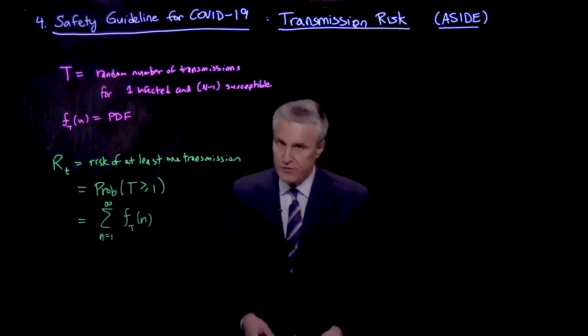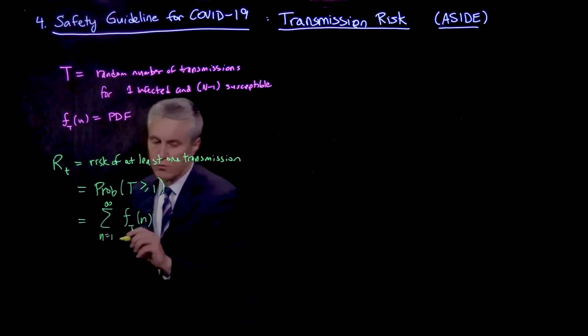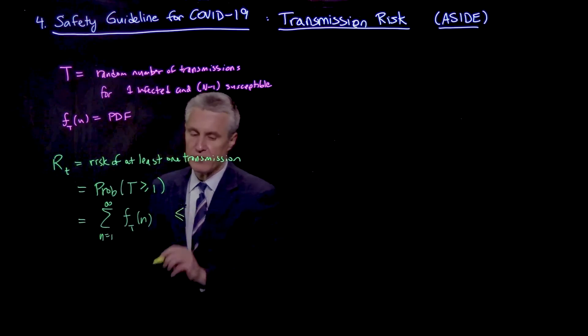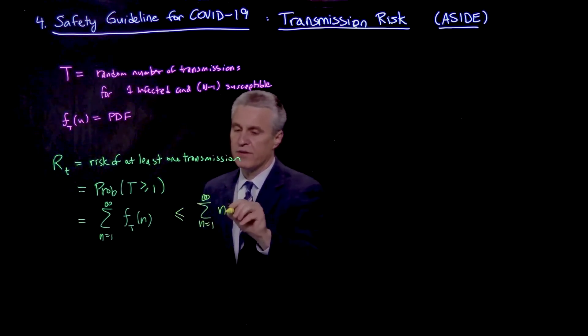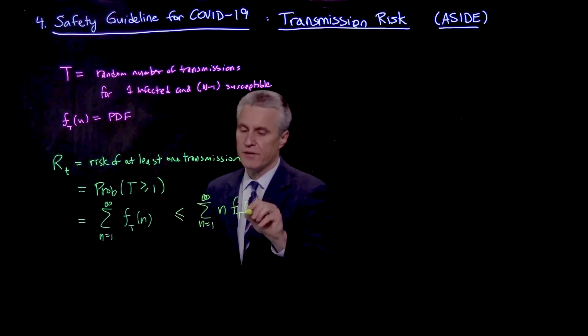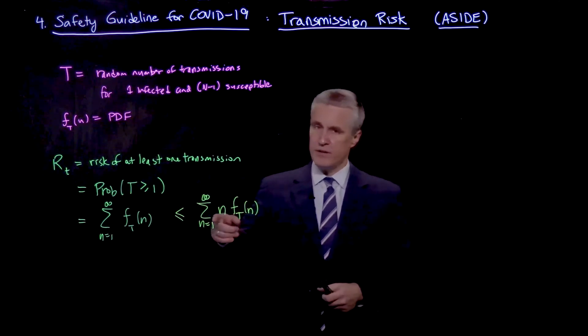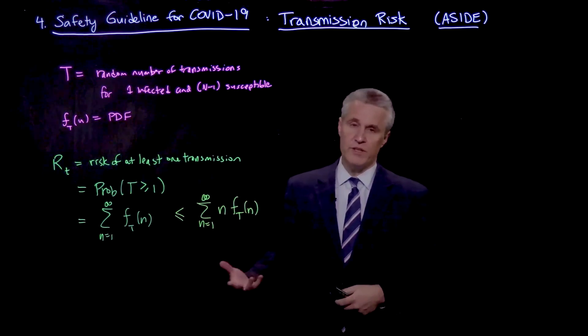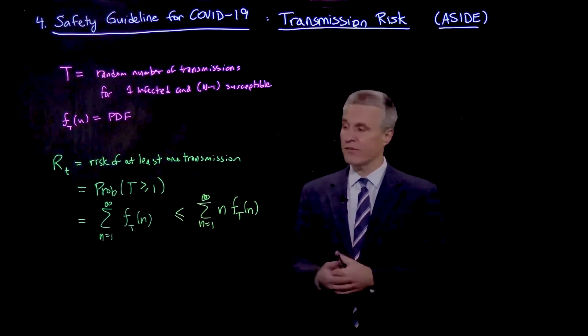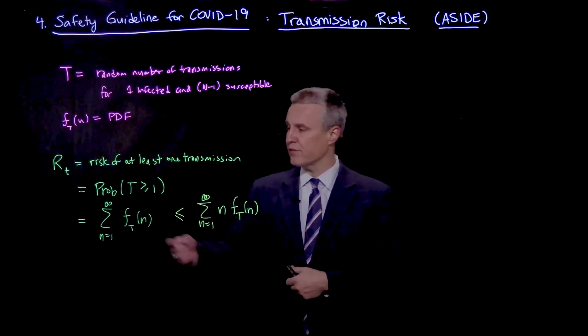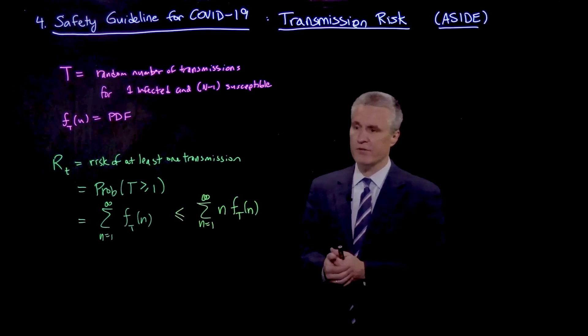Now I'd like to do a little calculation to get an upper bound on this quantity. So we can say that this is less than or equal to the sum from n equals 1 to infinity of n f_t of n. Now this is just a mathematical trick here. So n refers to the natural numbers 1, 2, 3, 4, etc. Those are all positive numbers and they're all greater than or equal to 1. So if I take 1 in this expression and replace it with little n, I'm only increasing the value of that sum.